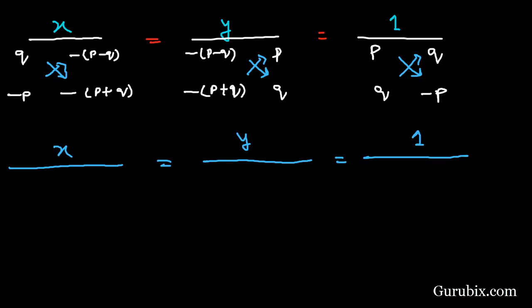Now we shall start the multiplication. If we multiply q with minus p plus q, then we have minus pq minus q squared. We shall write the sign of minus and bracket.